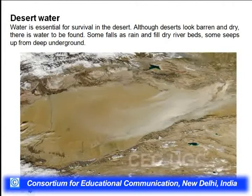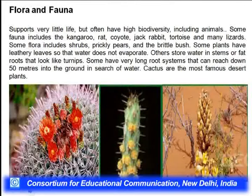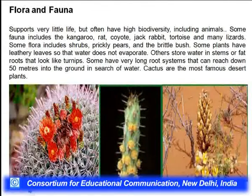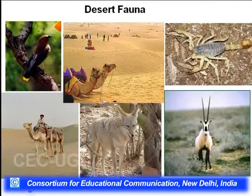Some rainfall falls and fills dry riverbeds; some goes deep underground. Desert flora and fauna include a desert national park in India. Though biodiversity is not as high as in humid conditions, deserts support very little but often very high biodiversity. Fauna includes kangaroo rats, rabbits, and lizards. Flora includes shrubs, prickly pears, and bushes. Some plants have leathery leaves to prevent evaporation, while others have deep root systems.